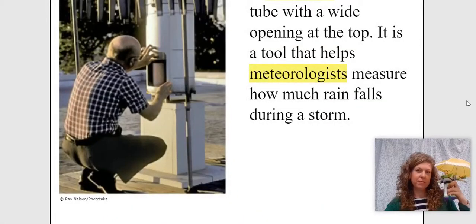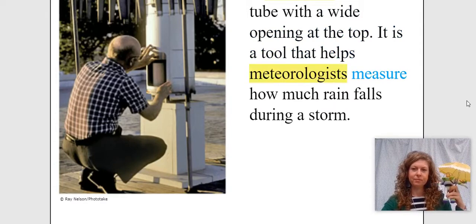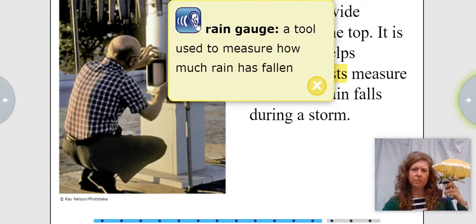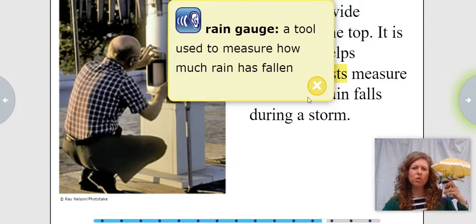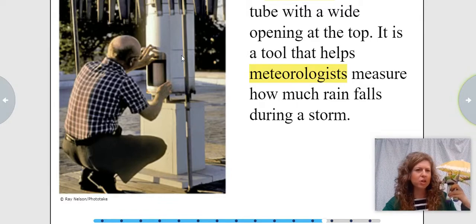A rain gauge is a long tube with a wide opening at the top. It is a tool that helps meteorologists measure how much rain falls during a storm. Here are a couple more highlighted words. Let's find out what a rain gauge is. Rain gauge: a tool used to measure how much rain has fallen. So a rain gauge is a tool. I wonder if our illustration is showing us someone using a rain gauge — they're measuring how much water has fallen.